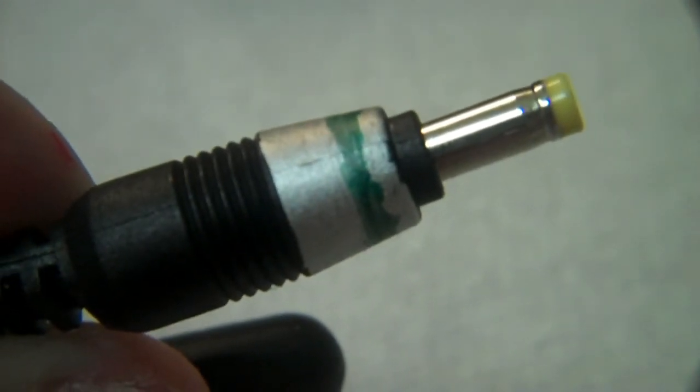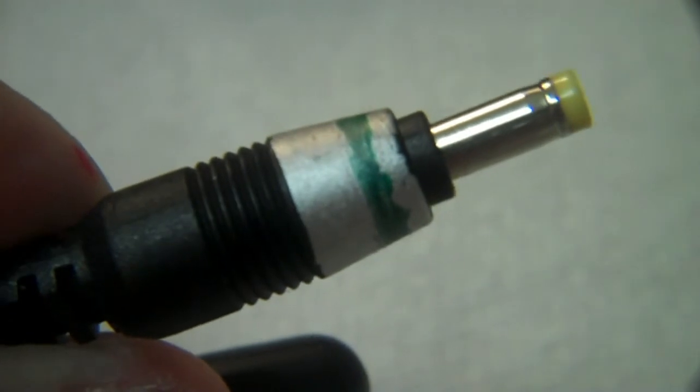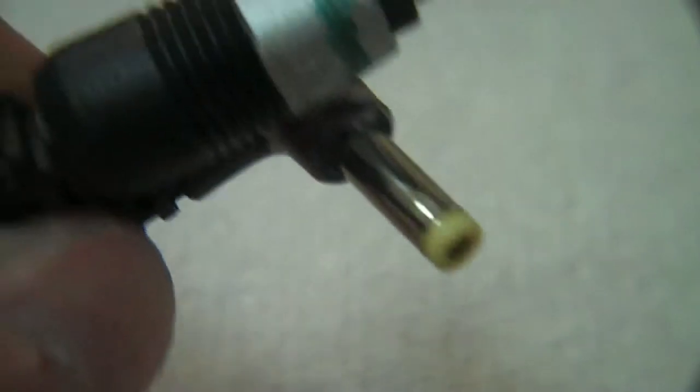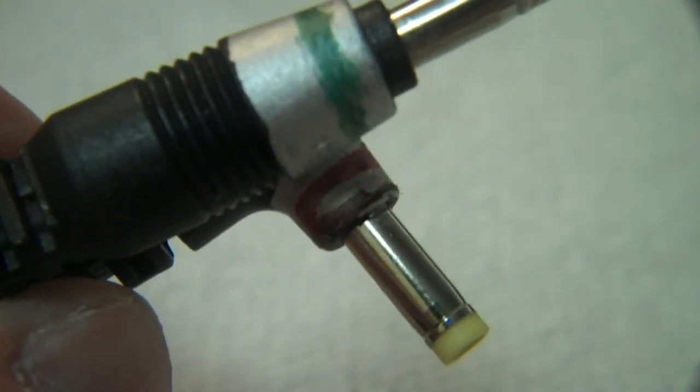I can pick this one up and because it has a green band according to the EIA color code, this is a 5-volt plug. So now I know which one I'm plugging into my device without having to blow one up. So this is a tip for the day.